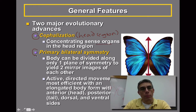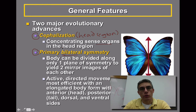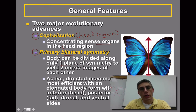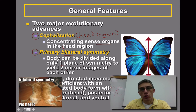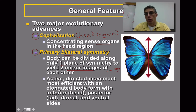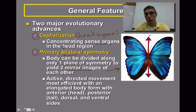These animals also have something called primary bilateral symmetry. The prefix 'bi' refers to two, so we're looking at an animal that can be divided along only one plane of symmetry. When you divide this animal in one plane, it actually produces two mirror images. A good example of this is the butterfly on the right-hand side — we have taken this butterfly and divided it in two, and you notice that the parts on each side are very similar to each other.